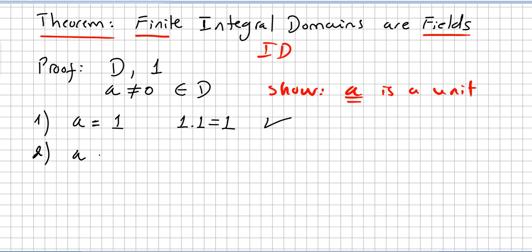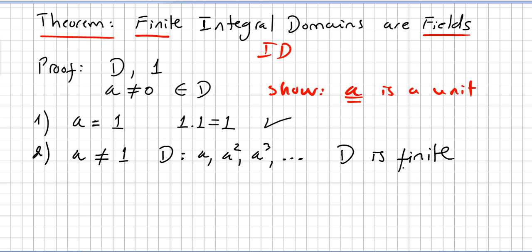Now if a is not the identity, we consider the sequence of elements in the integral domain: a, a², a³, and so on. But the integral domain D is, by hypothesis, finite, so this list will be a finite list. Therefore there must be two positive integers i and j such that a to the power of i equals a to the power of j.